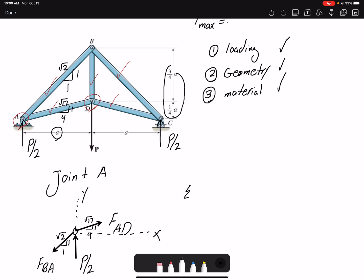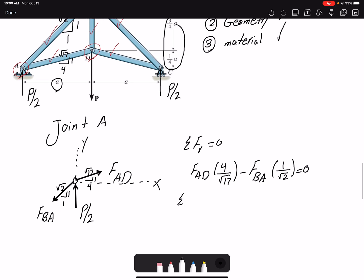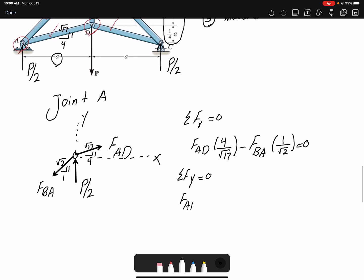Summation of forces in X: I have FAD, the horizontal component would be four over square root of 17 minus FBA, one over square root of two, equals zero. And summation of forces in Y equals zero. I have FAD, one over square root of 17 for the vertical component, then plus half of P minus FBA, one over square root of two, equals zero.